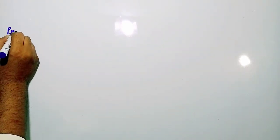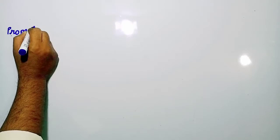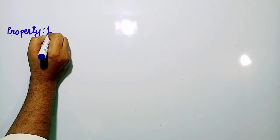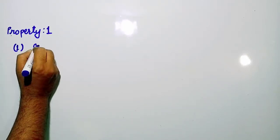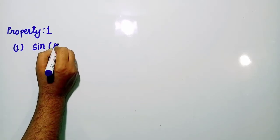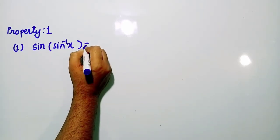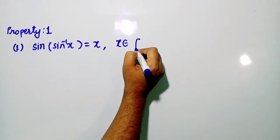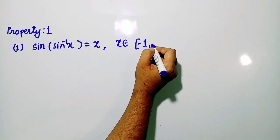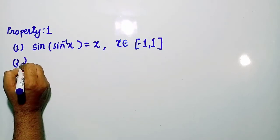Students, there are so many properties of inverse trigonometric functions. Let us see the first property. The first is: sin(sin⁻¹ x) = x, where x belongs to the closed interval [−1, 1].